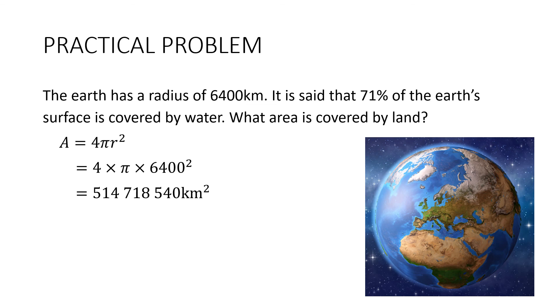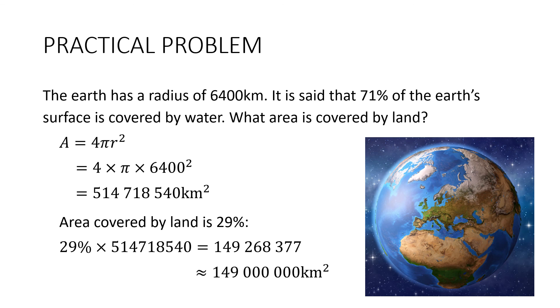We want the area covered by land, which is going to be 29%. So let's work out 29% of that number. And there it is there, 149,268,377 kilometers squared. And I think we'll round this to the nearest million. So approximately equal to 149 million kilometers squared.